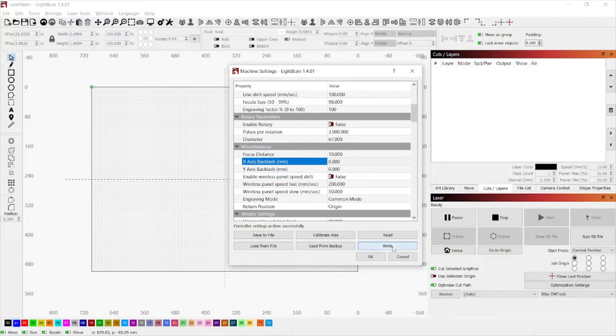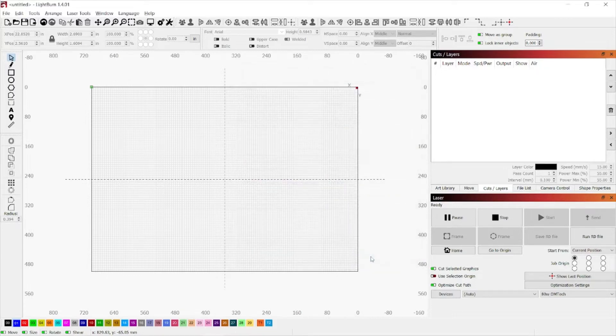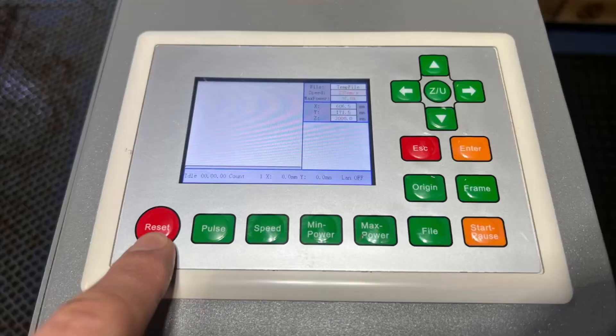Then we're going to hit Right. After you hit Right, you'll notice that it says Controller Settings written successfully. Then just select OK to exit out of the menu. And then we're going to go back to our controller and hit Reset to allow our laser to re-home and accept the new settings.